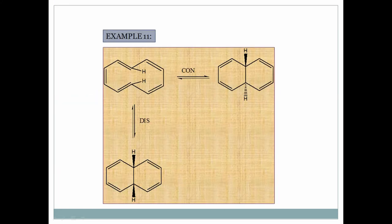Example 11: The methylenes are replaced by CH groups. The hydrogens are on opposite sides, so we apply con-electrocyclization: opposite hydrogens come to opposite sides in the product. In dis-electrocyclization, the opposite hydrogens come to the same side.